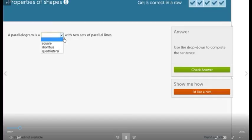A parallelogram is a quadrilateral with two sets of parallel lines. So we have to identify the parallelogram. We have to consider the properties: four sides, two sets of parallel sides, and equal opposite sides. What is it?